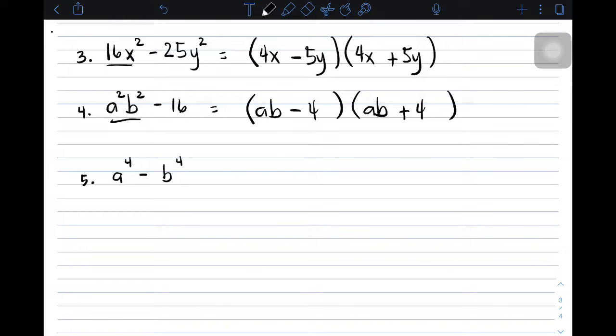Now, for the last one, I have number 5. You have a to the 4th power minus b to the 4th power. Don't worry. Those terms are both perfect square. So, you have square root of a to the 4th power, or a raised to 4 is a squared. So, you have here also a squared. And then, for the second term, you have b to the 4th power, that is b squared. And then, b squared. So, lagyan natin dito minus and plus.